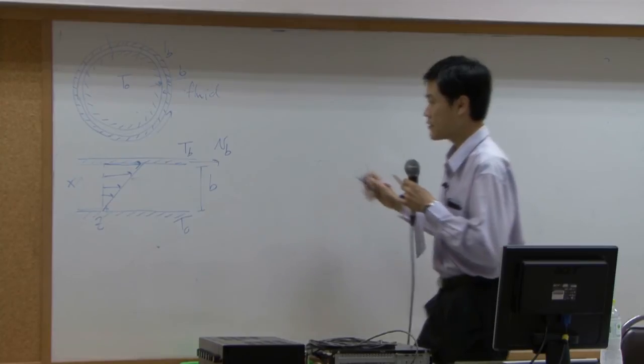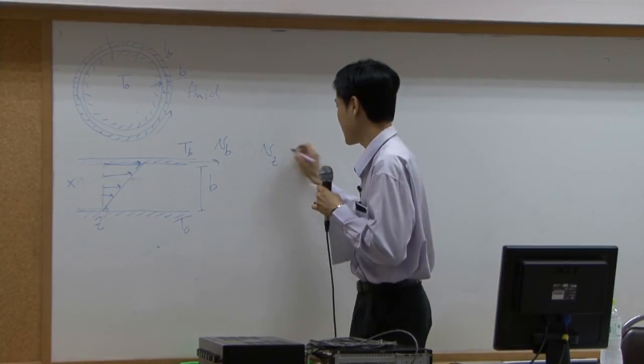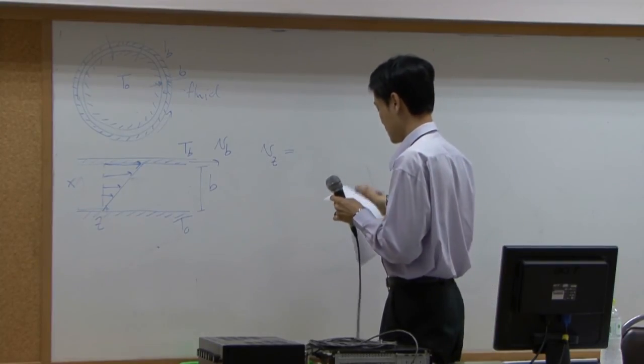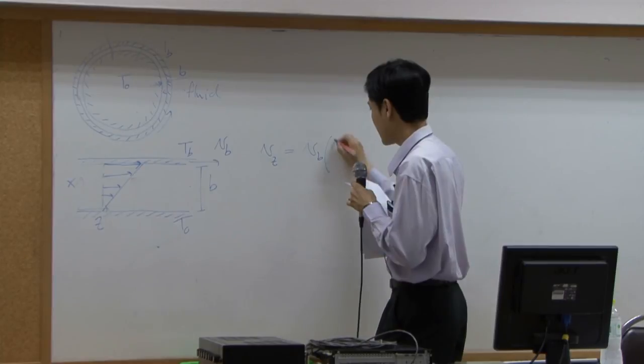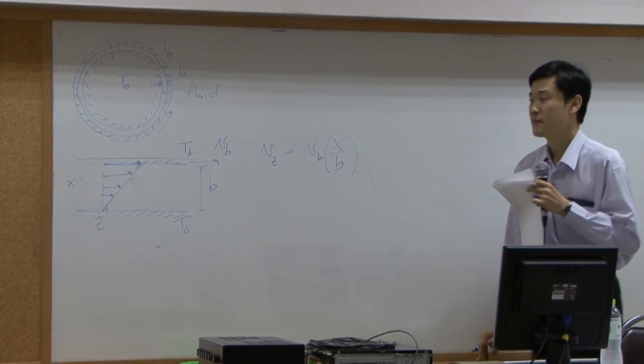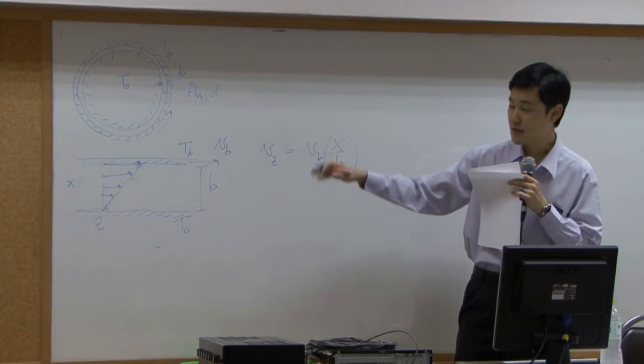So, velocity profile here is vz supposed to be equal to vb x over b. That's linear. At x equal to 0, velocity is 0. Because our solid is stationary at the bottom.